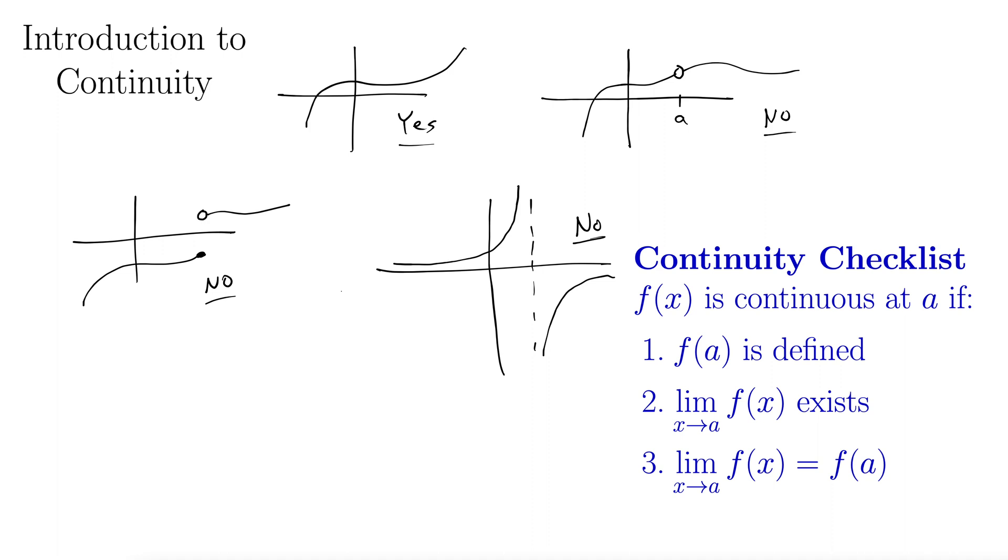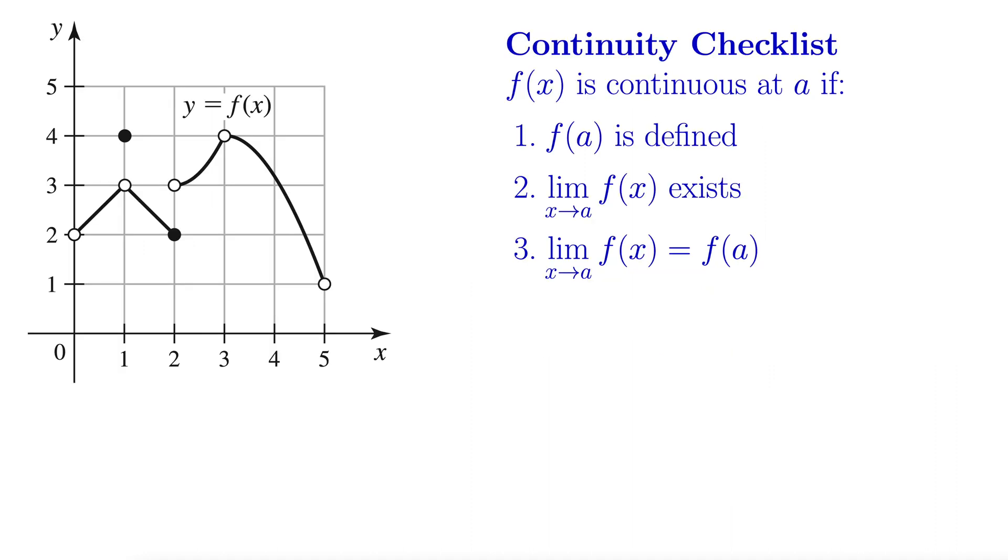The limit as x goes to a of f needs to exist, and the limit as x goes to a of the function needs to be equal to the value of f evaluated at a. So let's take a look at an example and see how this continuity checklist applies. It'll become a little more clear when we have a nice example.